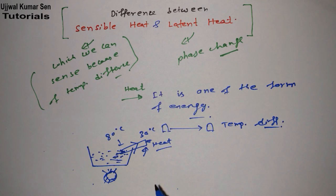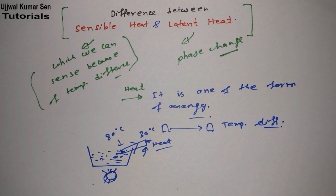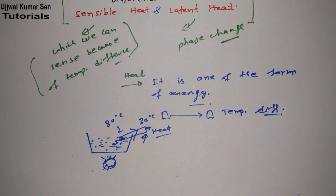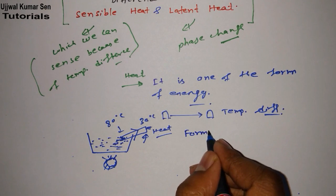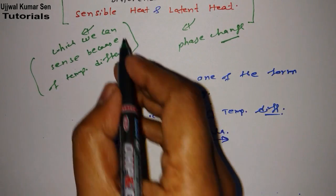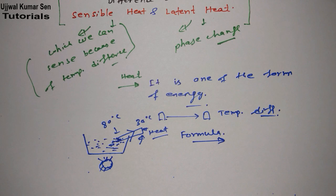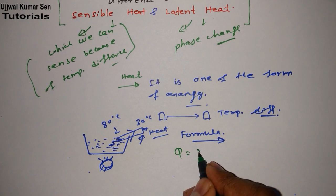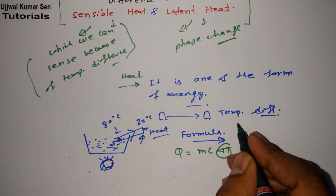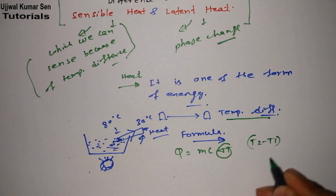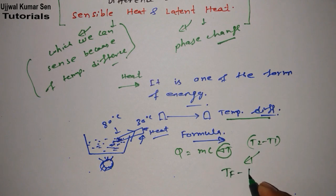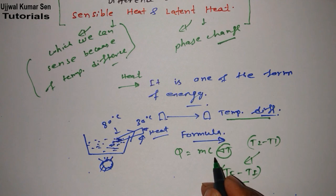That's because of temperature difference. So what is heat basically? The transfer of energy is taking place because of temperature difference — that is known as heat. It is one of the forms of energy. There is a simple formula: if you are preparing for competitive examination, the formula you'll most likely need for numerical problems is Q equals mc delta T, where delta T is the temperature difference, that is T2 minus T1, or T-final minus T-initial. M is mass and c is specific heat — it can be at constant pressure or constant volume, depending on the question.